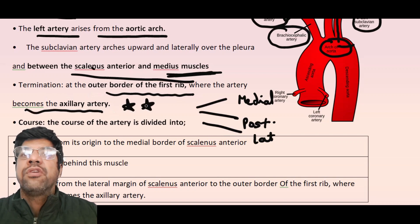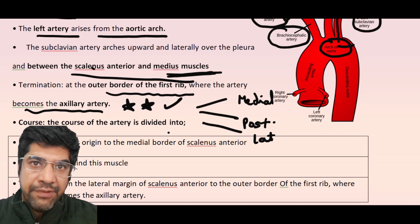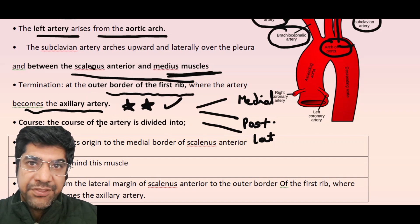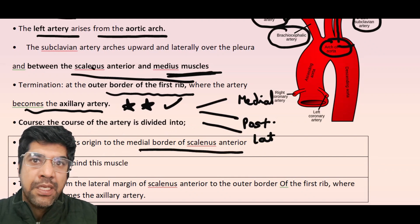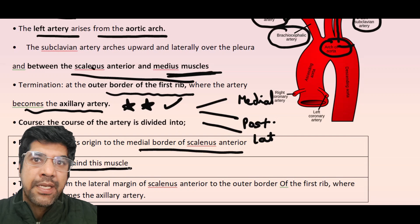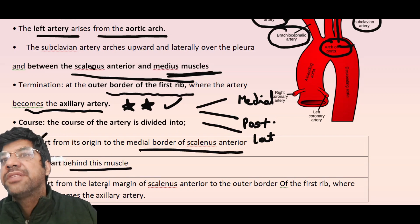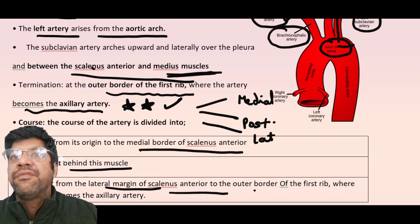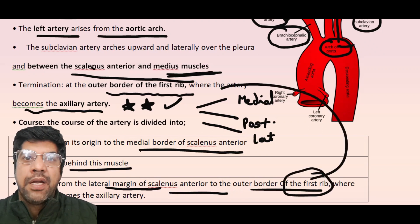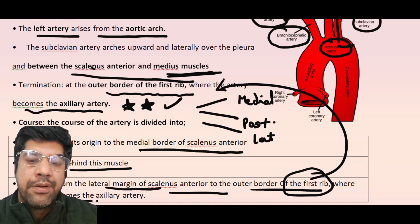The course of the artery is divided into three parts: the first part runs from the origin to the medial border of the scalenus anterior muscle; the second part is behind this muscle; and the third part runs from the lateral margin of the scalenus anterior to the outer border of the first rib, where the artery becomes the axillary artery.